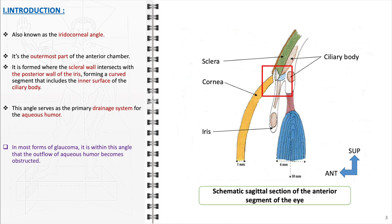The anterior chamber angle, also known as the iridocorneal angle, represents a crucial anatomical feature in the human eye. Located as the outermost part of the anterior chamber, this angle is established at the junction where the scleral wall — the supportive fibrous outer layer of the eyeball — meets the posterior wall of the iris, the eye's colored part. The convergence of these structures forms a distinctively curved segment.